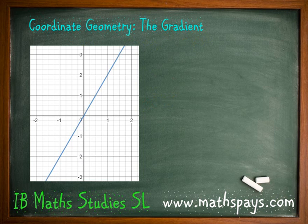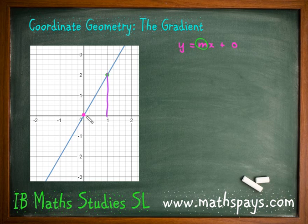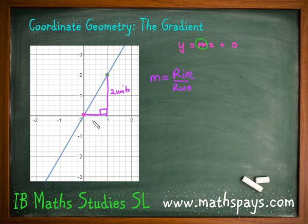Let's look at this first example. We've got a straight line and we want to figure out what the gradient is going to be. We know about the function but we don't know what m is. If it's drawn out for us, we can draw a right-angled triangle and use the rise over run formula — how high up does the triangle go divided by how far across. In this case, it goes up 2 units and across 1 unit, so the gradient is 2 over 1, which equals 2.